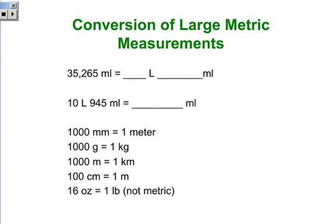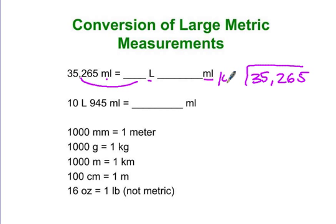All right, there are 1,000 milliliters in a liter, and so what we're doing is we're changing this into liters by dividing by 1,000. So you're going to do 35,265 divided by 1,000.